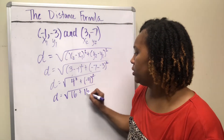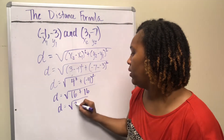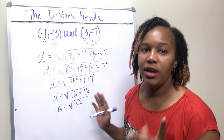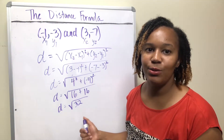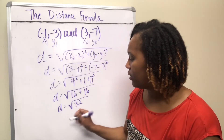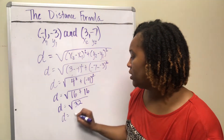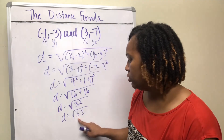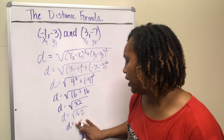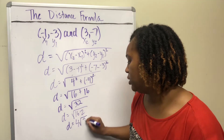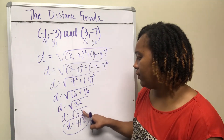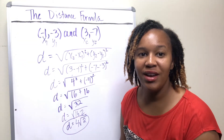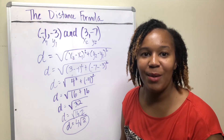That gives 16 + 16 = √32. If the problem asks for an exact answer, simplify: 32 = 16 × 2, and the square root of 16 is 4, so the exact answer is 4√2. We pulled out √16 = 4 and left the 2 under the radical. That's how you use the distance formula.